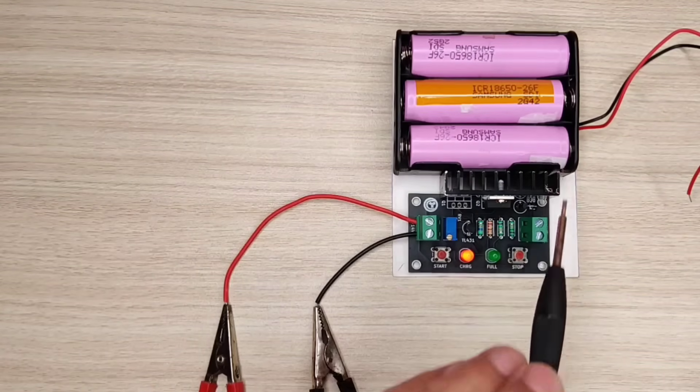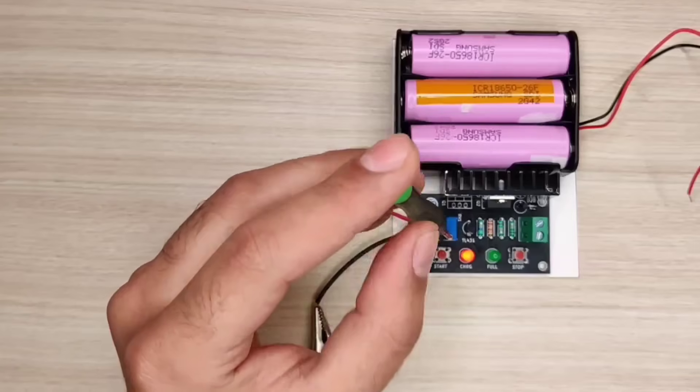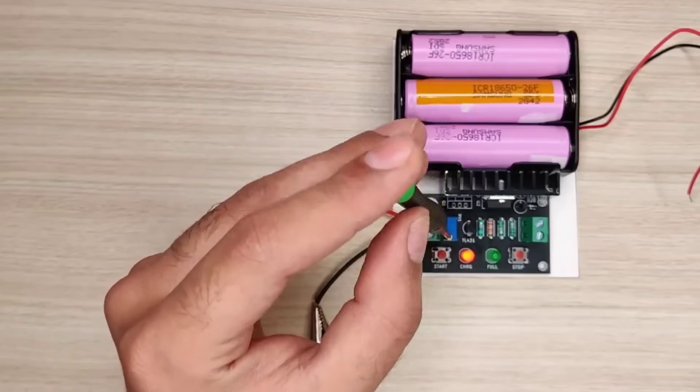Before connecting the battery to output, adjust this potentiometer till green LED turns on, to set cut off at 12.8 volts.